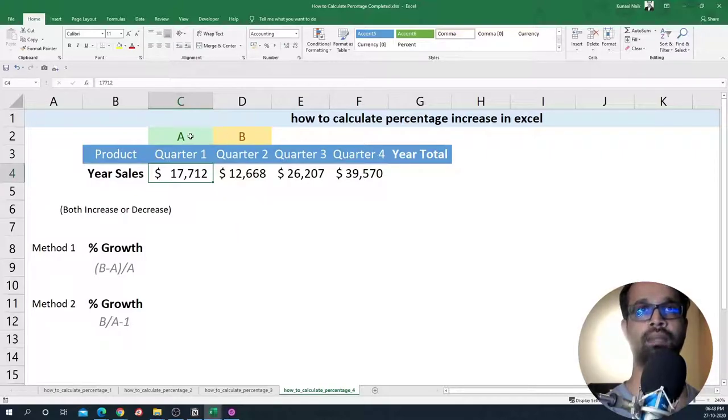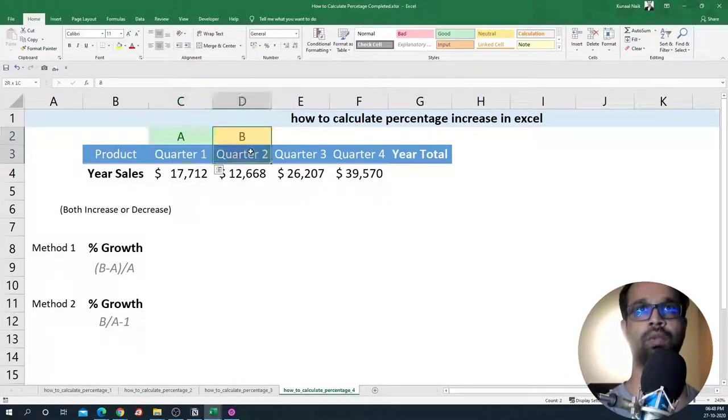Now I have marked quarter one with A and quarter two with B. So that's easy to follow when I'm writing the formula.